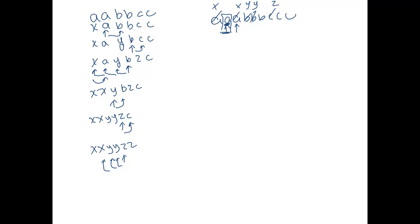Now I want to check: is there a B or a C left? If there is, I want to reject. If there isn't, I want to accept. So what we do is move right, skip over all the Y's — if I ever see a B I implicitly reject. Then skip over all the Z's. If I run into a blank space having not seen a B or a C, it means I've replaced all the A's, B's, and C's equally, and I can accept the string.